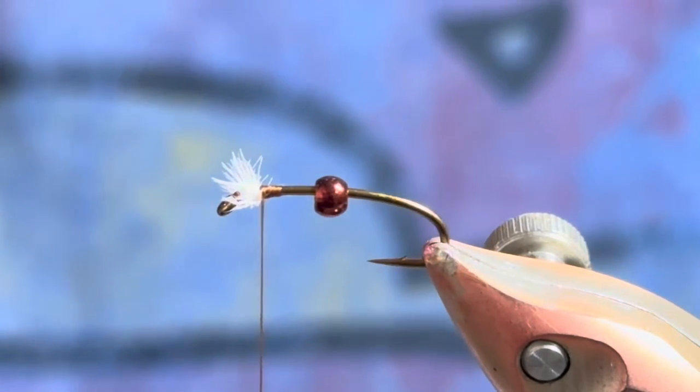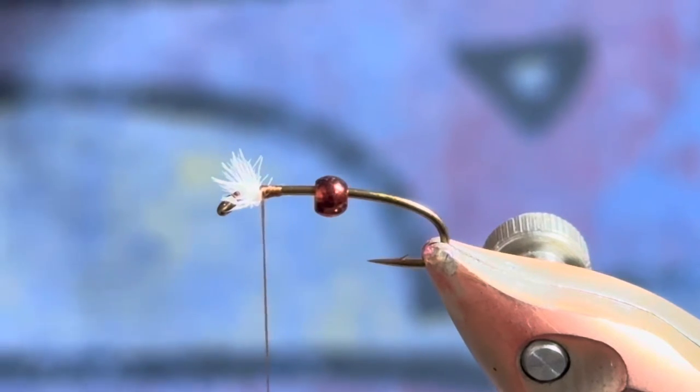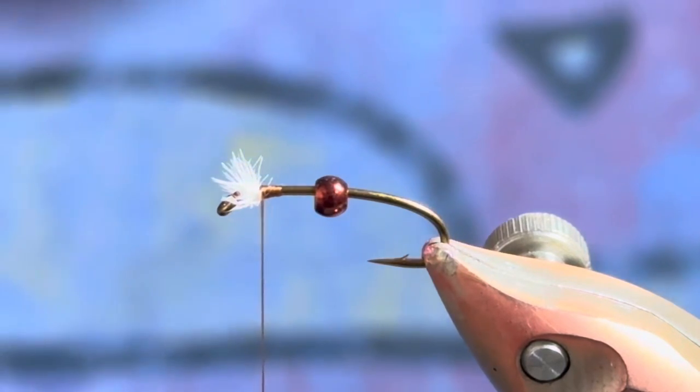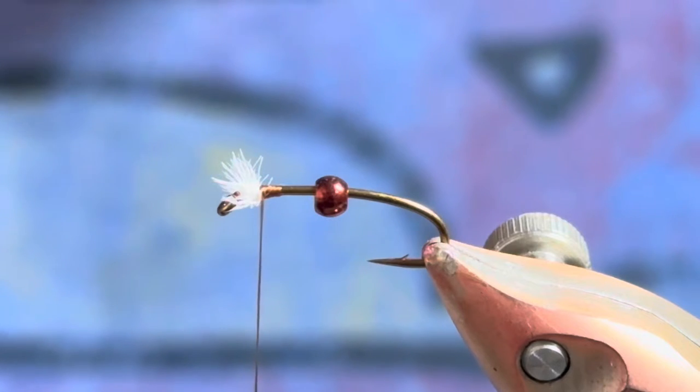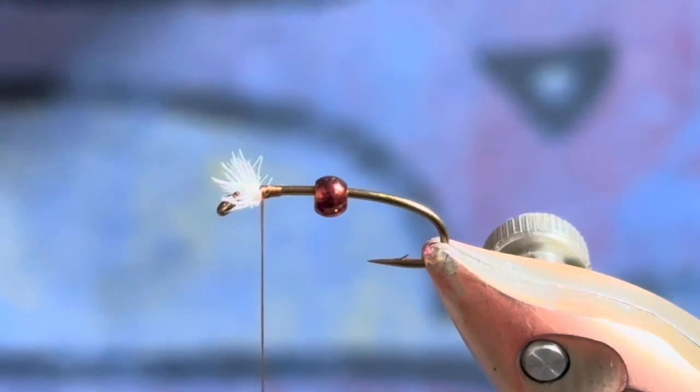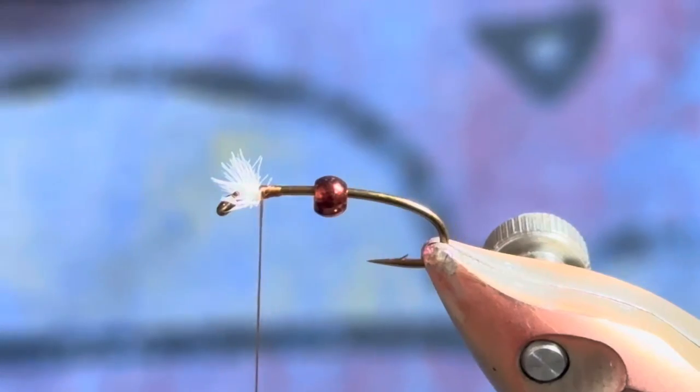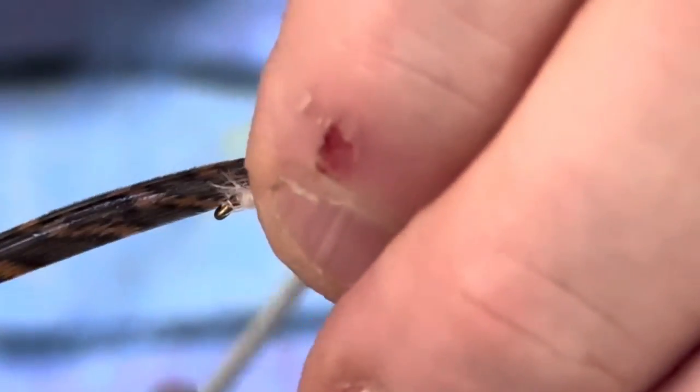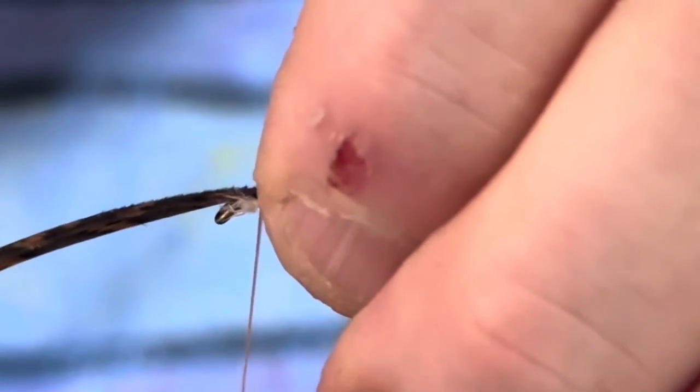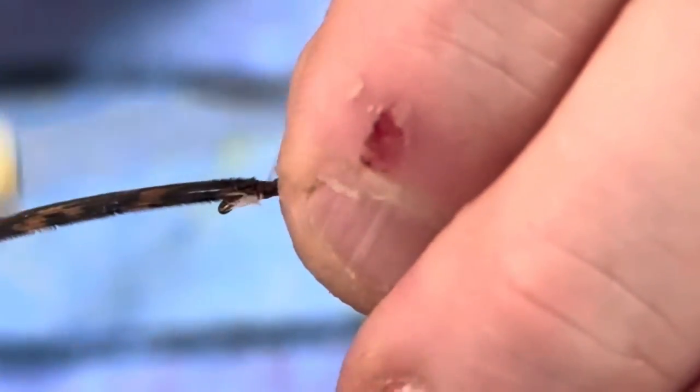You want to get enough of these fibers just to cover the top of the bead. If you don't have natural feathers then just grab a piece of scud back or something like that that you can cut to length.